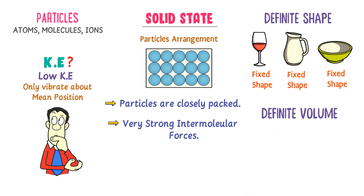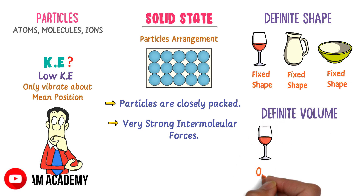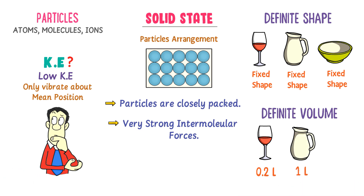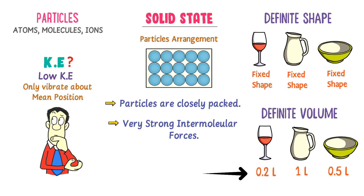Also, solids have definite volume. For example, this glass can hold only 0.2 liters of water, this jug can hold only 1 liter of water, and this pot can hold 0.5 liters of water. So the volume of the glass is fixed at 0.2 liters, the jug is fixed at 1 liter, and the pot is fixed at 0.5 liters.